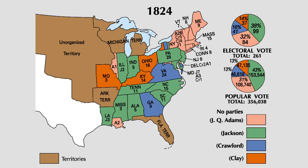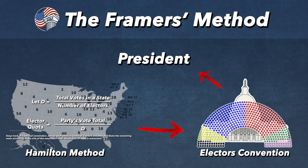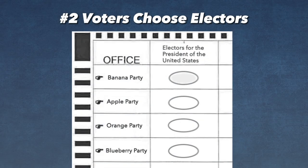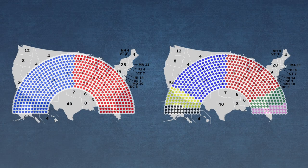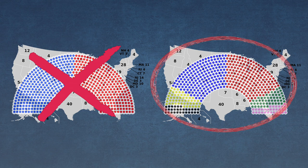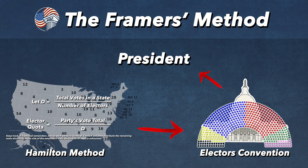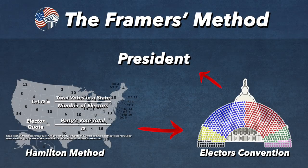Preventing a majority will force the electors into deliberations to choose the president. The best available method to choose a variety of electors and prevent a majority is the Hamilton method. Political parties within each state submit elector lists with their ranked order to their respective states' department of elections. On Election Day, voters cast ballots for these slates of electors. Votes are then divided proportionally through the Hamilton method, and parties are awarded electors based on the vote percentage they received. The primary reason for using the Hamilton method is the prevention of a majority, so the ensuing electors' convention may perform as intended.